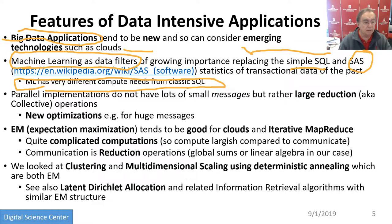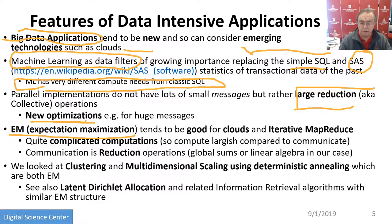When you look at data systems, they have large messages because they have large reduction operations, which we call collectives in the scientific computing world. So we need new optimization. Expectation maximization is really a dominant form of machine learning. Iterative MapReduce, first pointed out by Andrew Ng, supports that — although we also pointed that out very early on; 2008 was our first paper in that area.